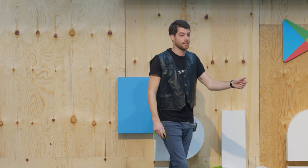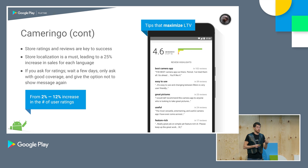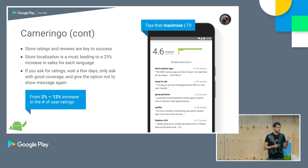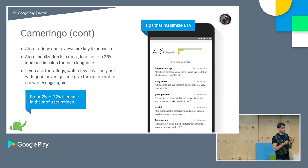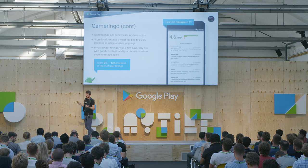Nothing is worse than being prompted the entire time and then giving a one-star review out of annoyance. For store listing, they would never use machine translators or Google Translate — always humans, because it has to be natural. Store listing experiments are a key ingredient. According to Camaringo, the first time they optimized this part of the funnel, it led to a 25% increase in downloads.